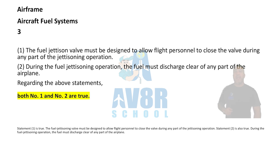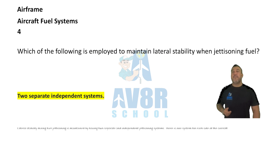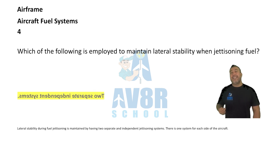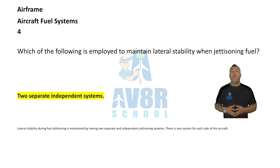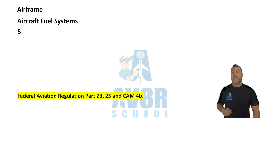Number four: to maintain lateral stability when jettisoning fuel, the system employs two separate independent systems — one for each wing, left and right.